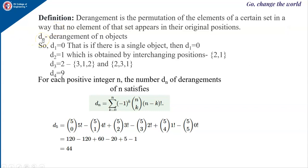We are going to use dn to represent the derangement of n objects. Suppose you have a single object, then the number of derangements of a single object is equal to 0, because you have only one position and you should not place that object in its original position. So you cannot have any permutation at all. Therefore d1 is equal to 0.